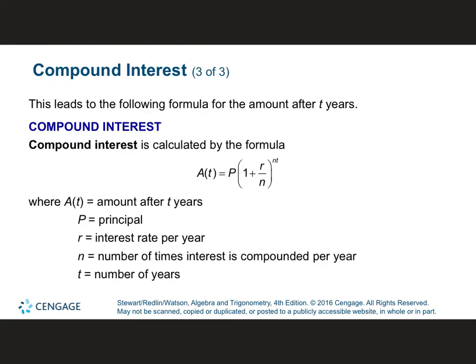With your last example in the notes, you're working with compound interest. The compound interest formula is A of T equals your principal times 1 plus your rate over N, all raised to the power of N times T. Your P is your principal — your starting amount. Your R is your interest rate per year, given as a percent that you convert to a decimal. Your N is the number of times interest is compounded per year — annually, semi-annually, and so on.